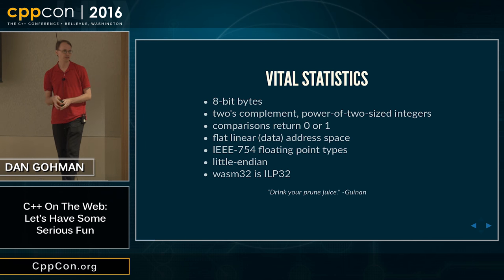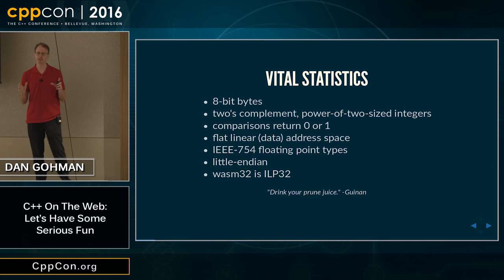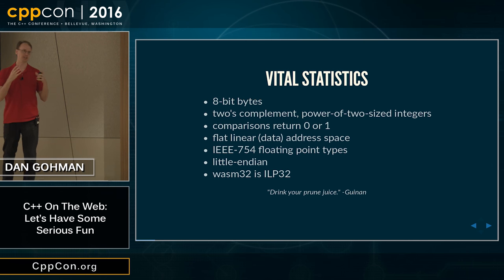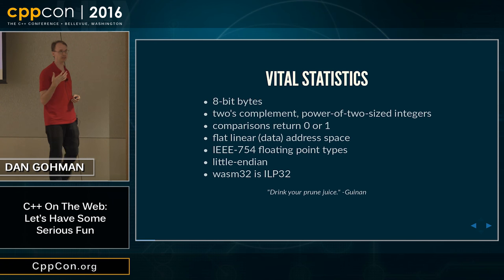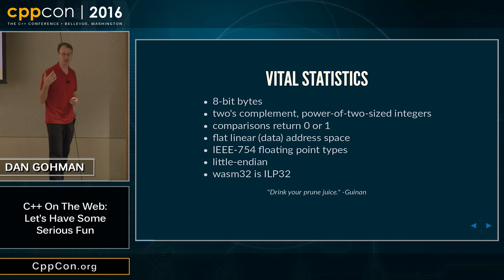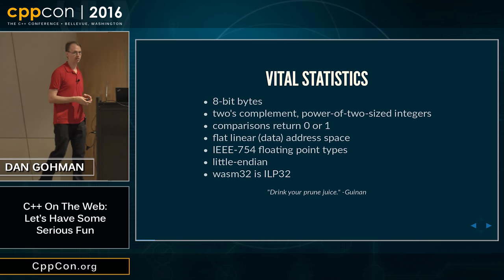We're looking at a 32-bit variant of WebAssembly and a 64-bit variant. Technically there isn't actually a variant — within the system, when you talk to memory, you can use 32-bit or 64-bit pointers. Right now the focus is largely on 32-bit pointers, particularly on the web. Most applications on the web aren't going to use more than four gigabytes of RAM, and using smaller pointers means smaller values overall.